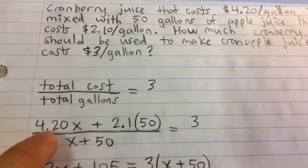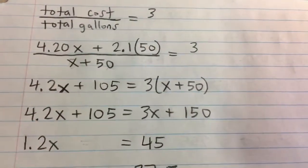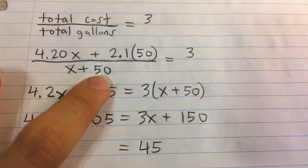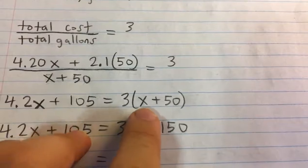Here's our equation: 4.2x plus 2.1 times 50 over x plus 50 equals 3. And we can solve for x in this equation by multiplying both sides by x plus 50. So it gets rid of it in the denominator and moves it to the right here.